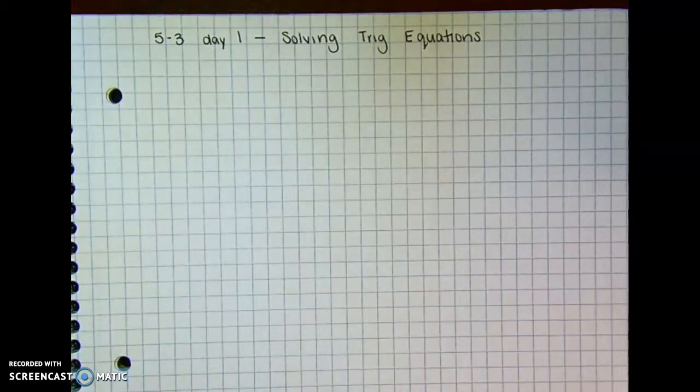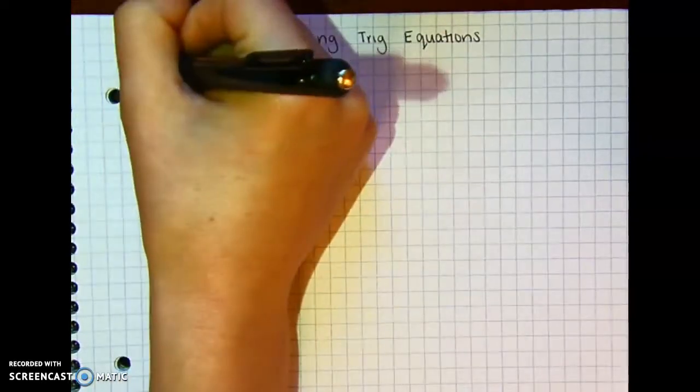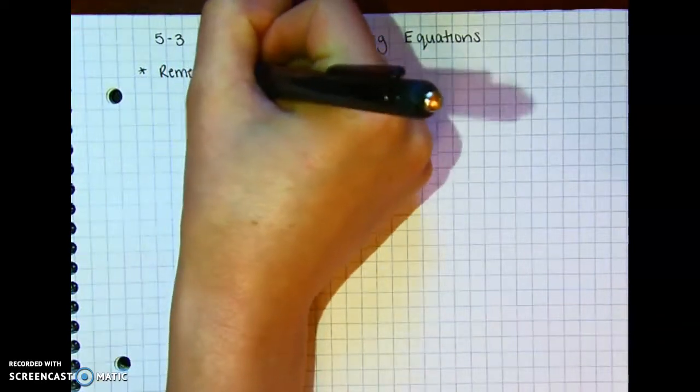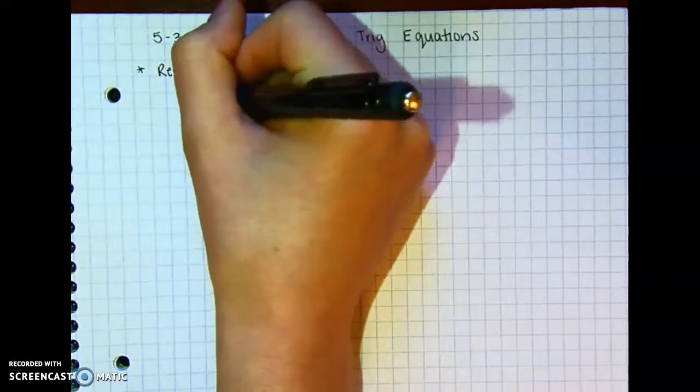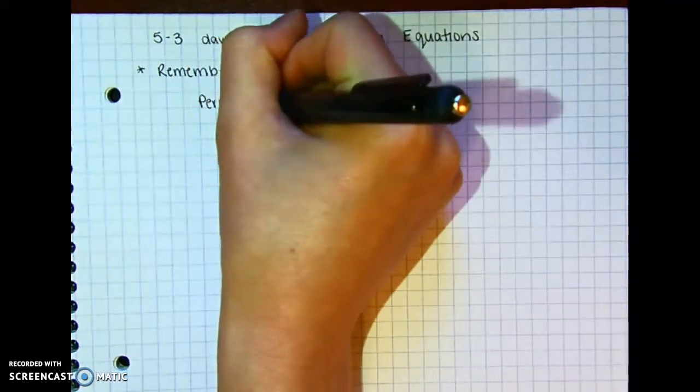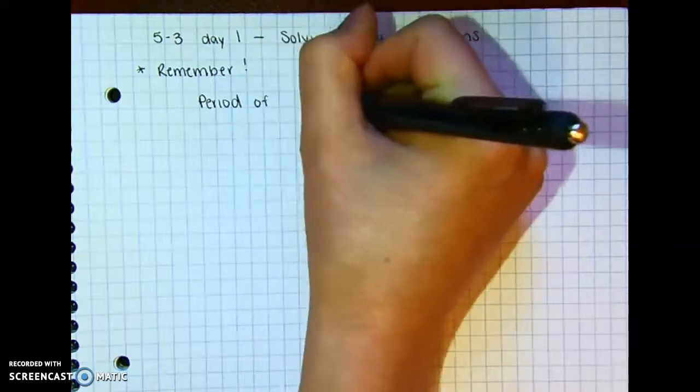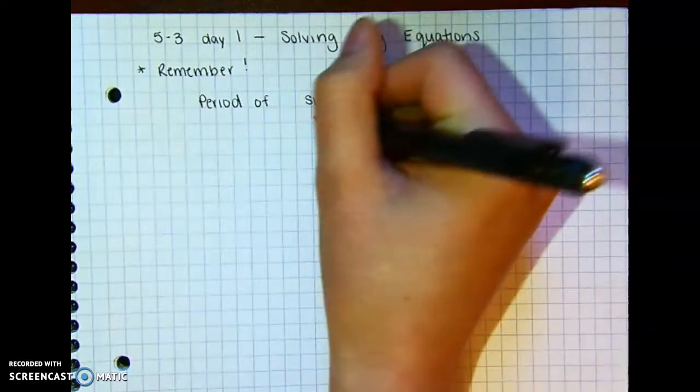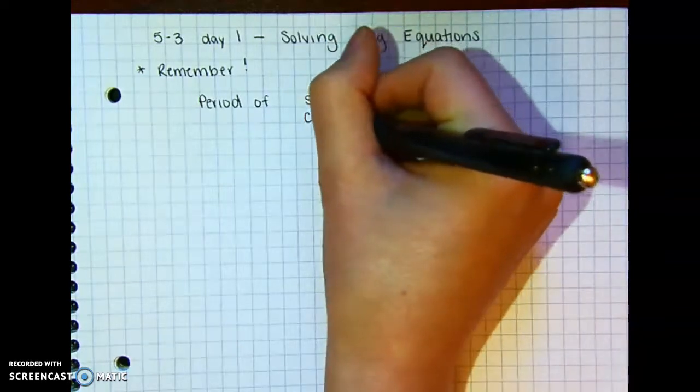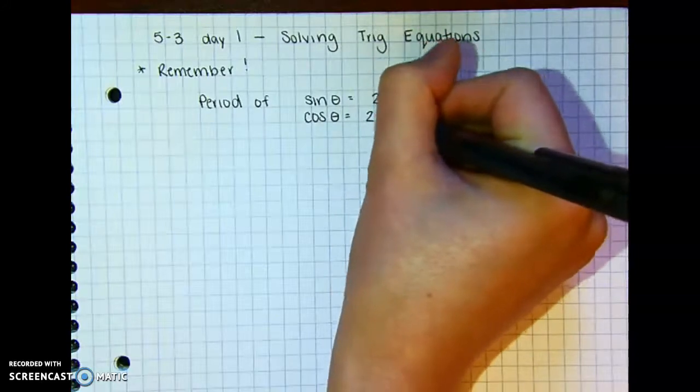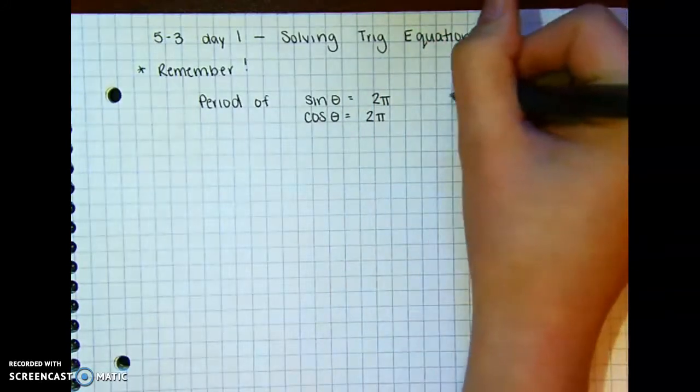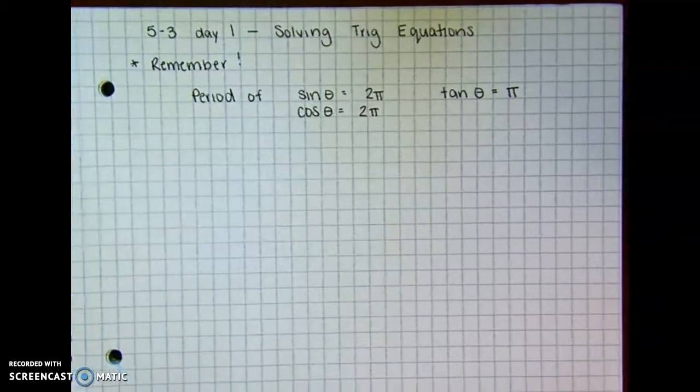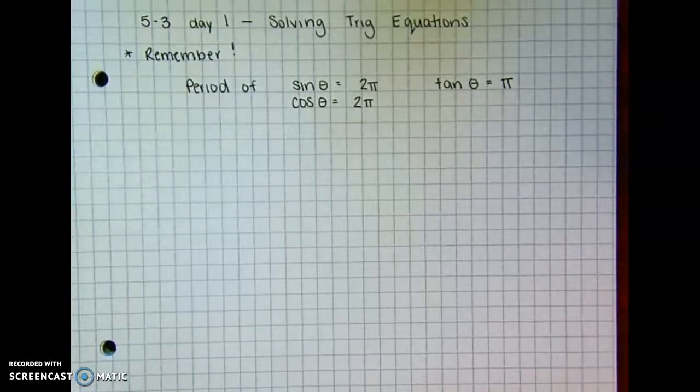So there's a few things we need to remember first. First thing you should remember when solving are the periods of each trig function. Remember the period of sine of theta is 2π, same with cosine of theta and the reciprocal functions. And then tangent has a period of just π. So you need to make sure you remember that in the unit circle, as well as honestly the whole unit circle.